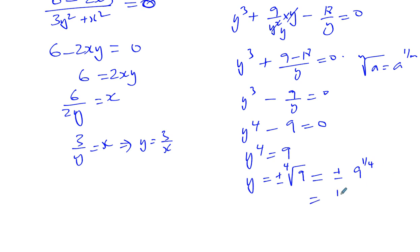It's plus or minus 9 to the power of a quarter. I know 9 can be expressed as 3 squared, so it's 3 squared to the power of a quarter, which is 3 to the power of a half. And 3 to the power of a half is the square root of 3, so you've got plus or minus the square root of 3.